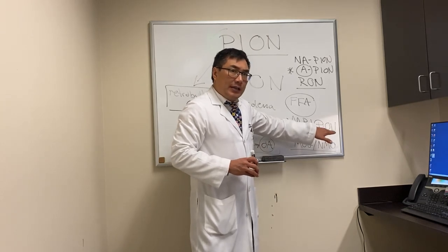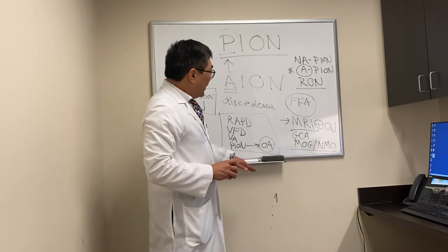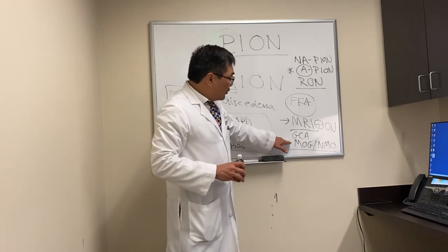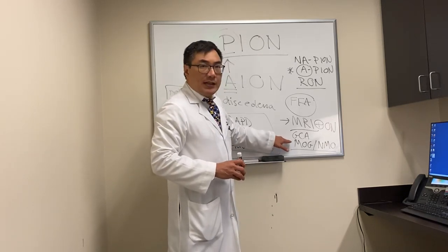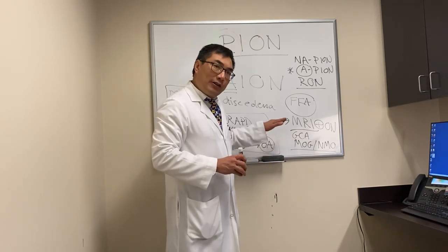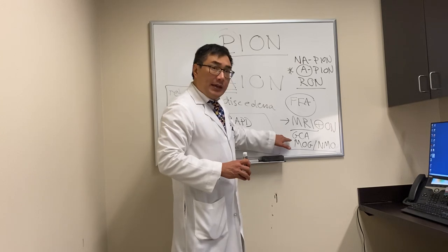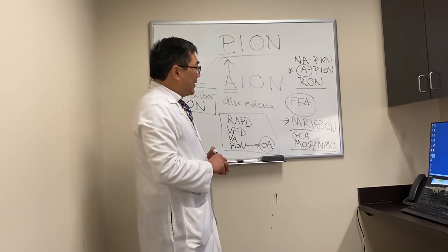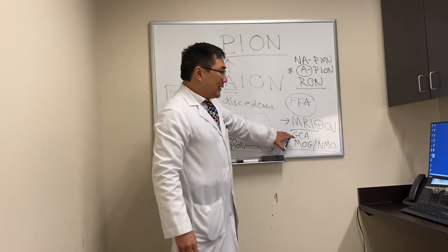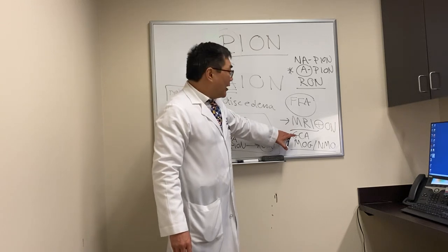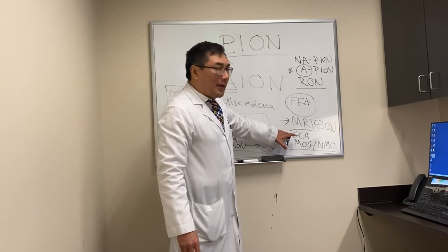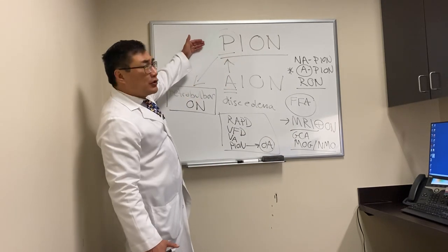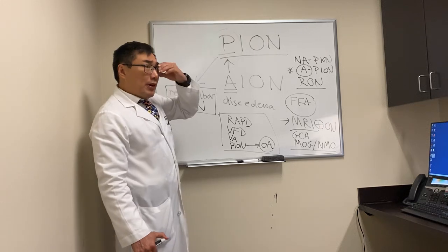When you have optic nerve enhancement, you should be thinking about antibody-mediated conditions like MOG (myelin oligodendrocyte glycoprotein) or NMO (neuromyelitis optica). This is especially true if the patient already has another autoimmune disease like lupus — that means we should be thinking antibody-mediated rather than delayed-type hypersensitivity or granulomatous causes.